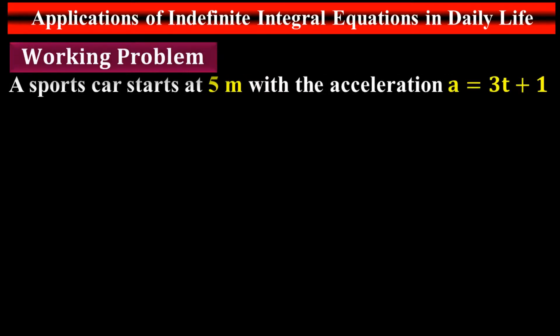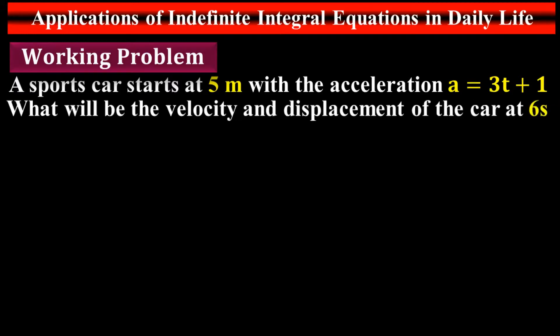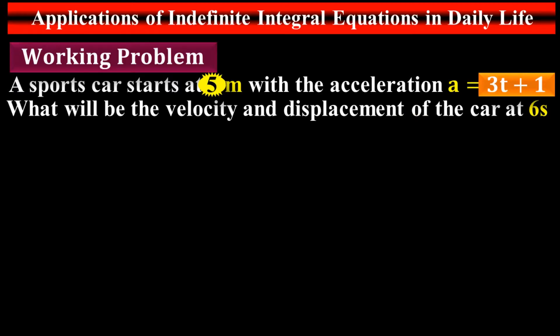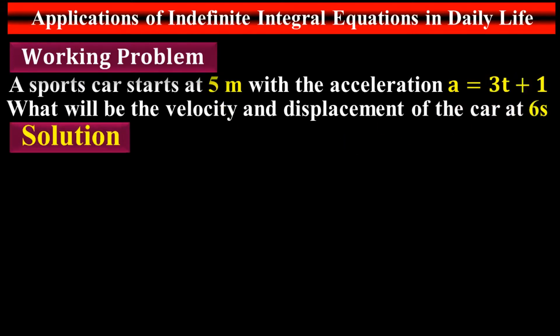Working problem: a sports car at 5 metres with acceleration 3t + 1. What will be the velocity and displacement of the car at 6 seconds? The statement says there is a sports car with an initial displacement of 5 metres having acceleration 3t + 1, and we need to find the velocity and displacement of the car after 6 seconds.